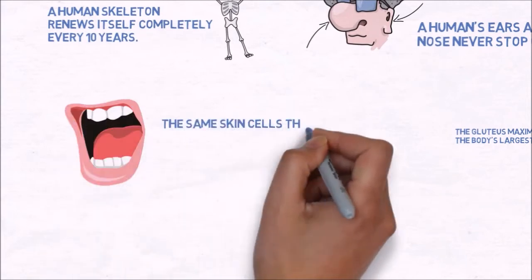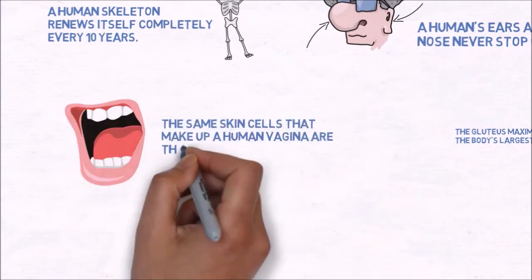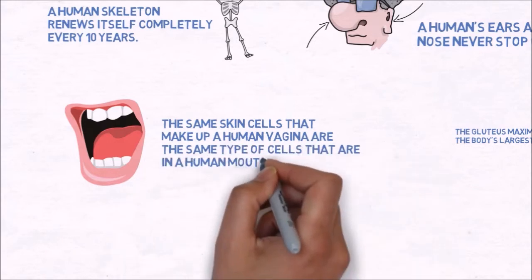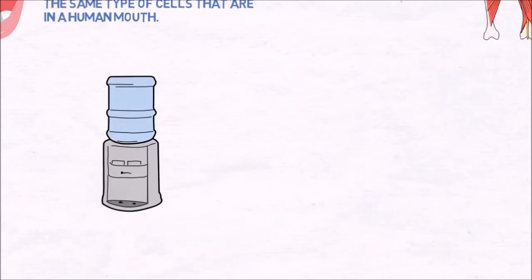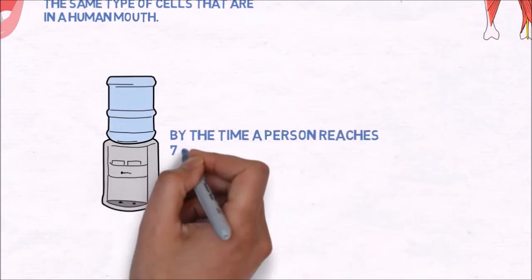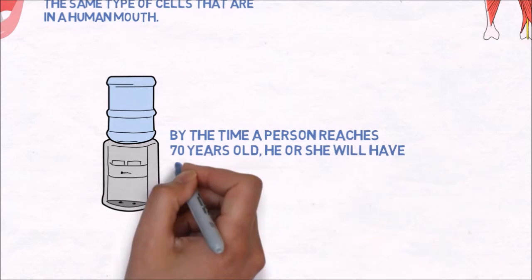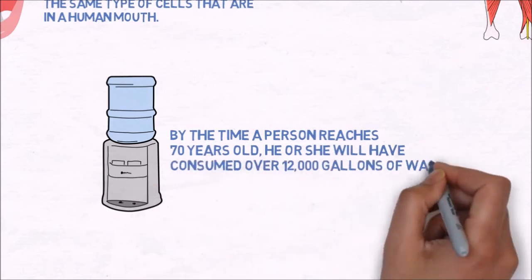The same skin cells that make up a human vagina are the same type of cells that are in a human mouth. By the time a person reaches 70 years old, he or she will have consumed over 12,000 gallons of water.